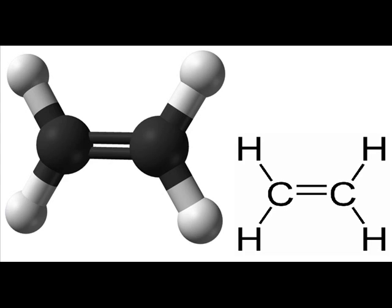This hydrocarbon has four hydrogen atoms bound to a pair of carbon atoms that are connected by a double bond. All six atoms that comprise ethylene are coplanar. The H-C-H angle is 119 degrees, close to the 120 degrees for ideal sp2 hybridized carbon.